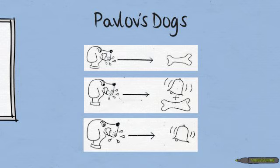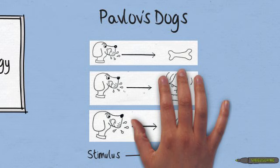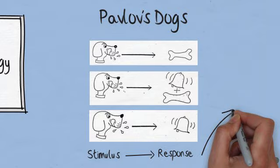In a nutshell, Pavlov discovered a process in which a previously neutral stimulus came to evoke a specific response by being repeatedly paired with another stimulus that evoked the response. Psychologists came to call this classical conditioning.